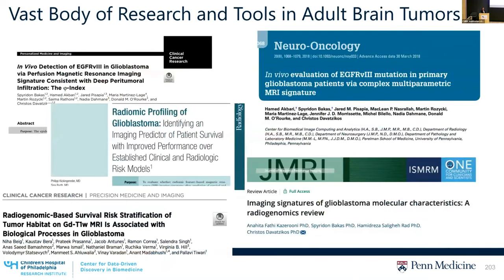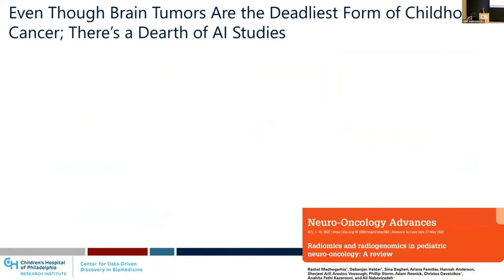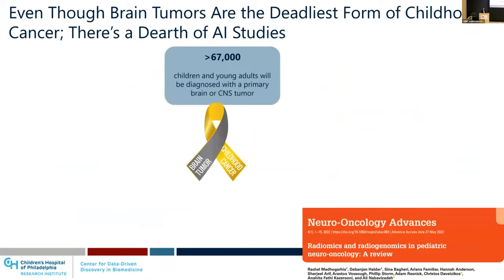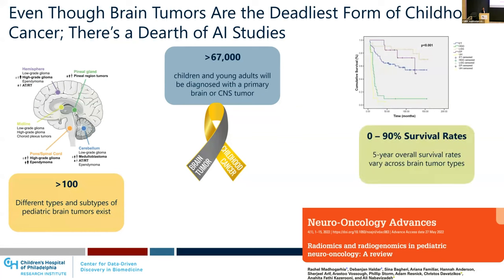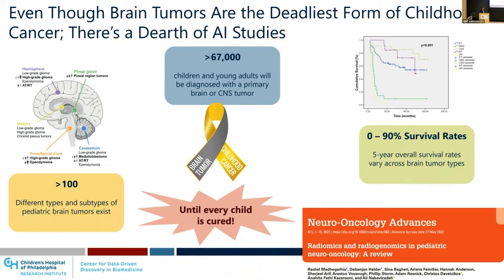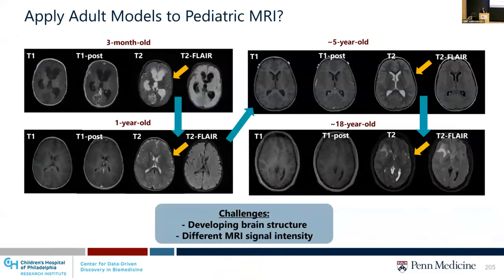There has been a vast body of research and developed tools in adult brain tumors, but even though brain tumors are the most common form of childhood cancer, there is a dearth of AI studies. This is despite the fact that tens of thousands of children with brain tumors are diagnosed, and there is large heterogeneity across different tumor types and a heterogeneous response to treatments. It is very important to use AI to help provide diagnostics and prognosis for children.